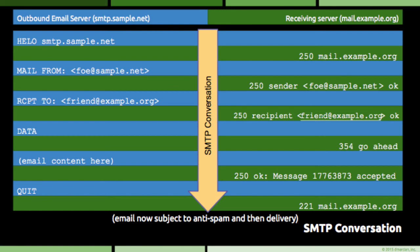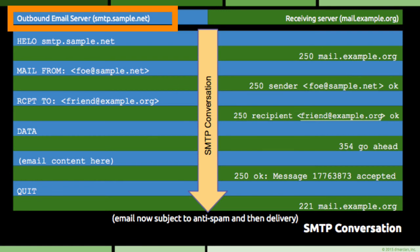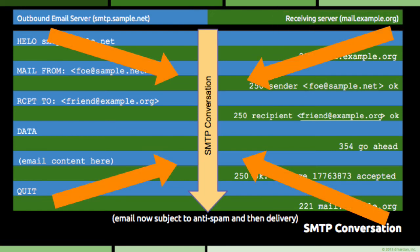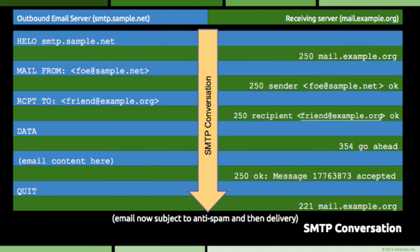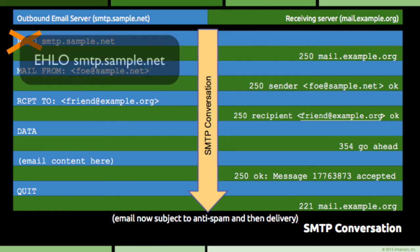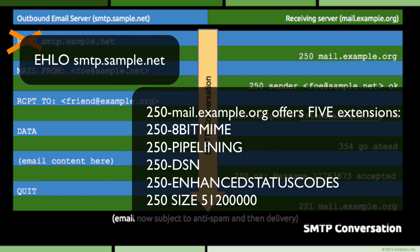We'll walk through a sample conversation. The sample is using smtp.sample.net as the outbound server, shown in blue at the top, and mail.example.org as the receiving server, in green. The conversation flows from top to bottom as indicated by the giant arrow going down the middle of the screen. The very first command that the outbound server issues after connecting to the receiving server is the hello command, which includes the name of the outbound server — sort of like introducing one's self at a party. As a side note, in the real world the hello command has largely been replaced with the EHLO command, pronounced e-h-lo, which allows the receiving server to pass information about its abilities back to the outbound server as part of the reply.